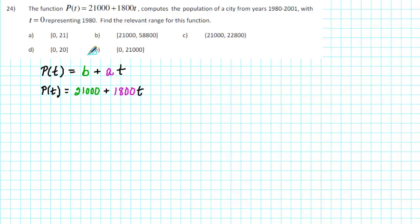First of all, notice that P is a linear function that has the form P(t) = b + at. b stands for the beginning value. In this case, the initial population is 21,000 people. The value of a represents the average rate of change. In this case, the 1,800 tells us that the population is increasing by 1,800 people per year.